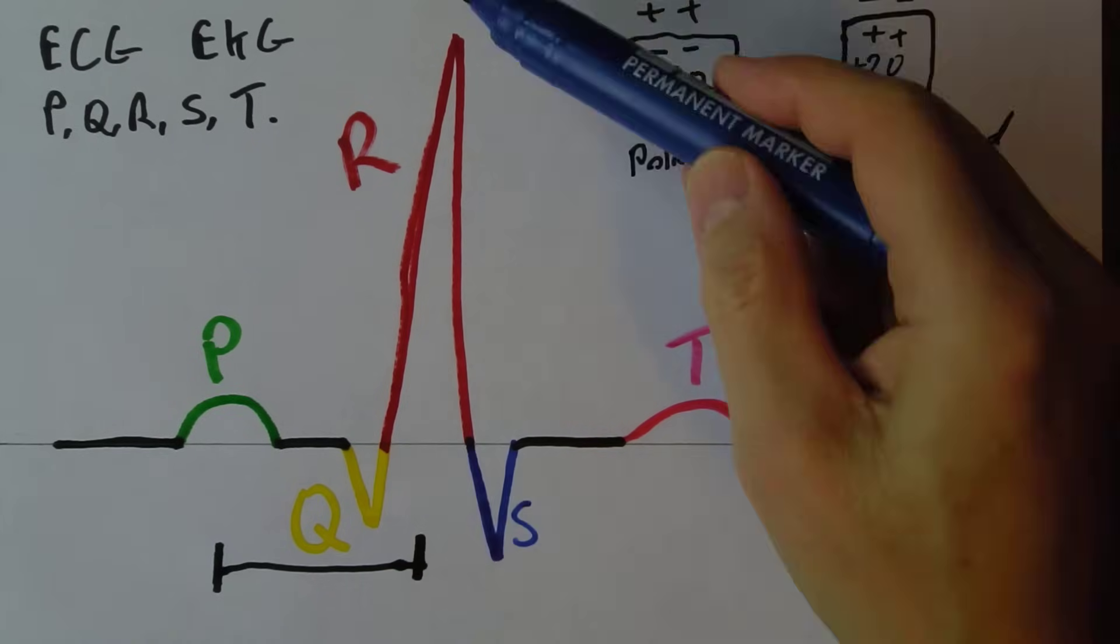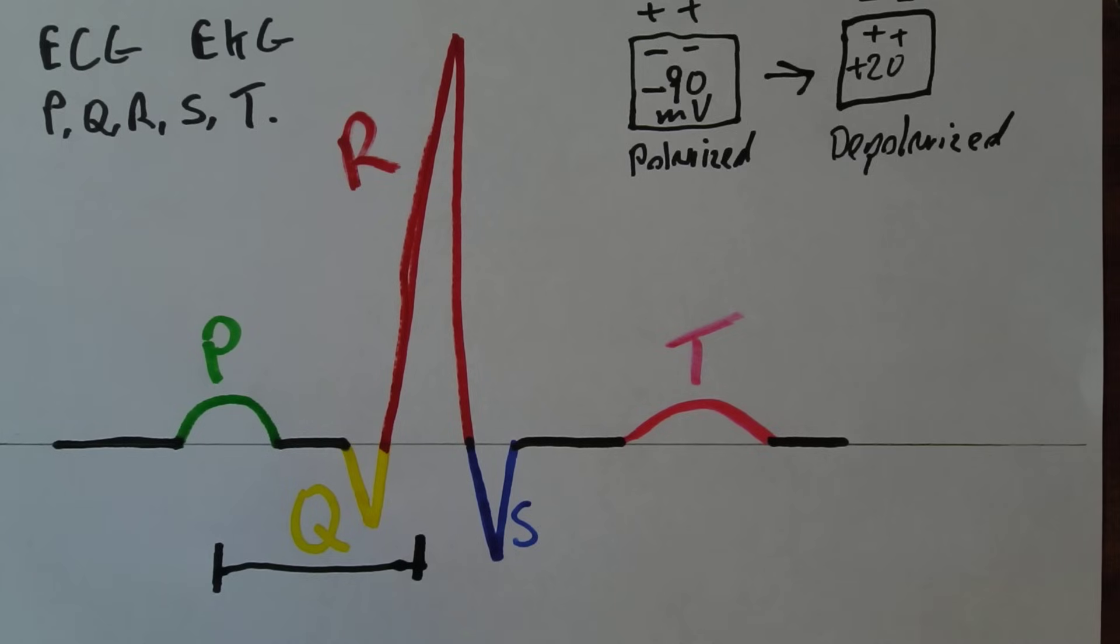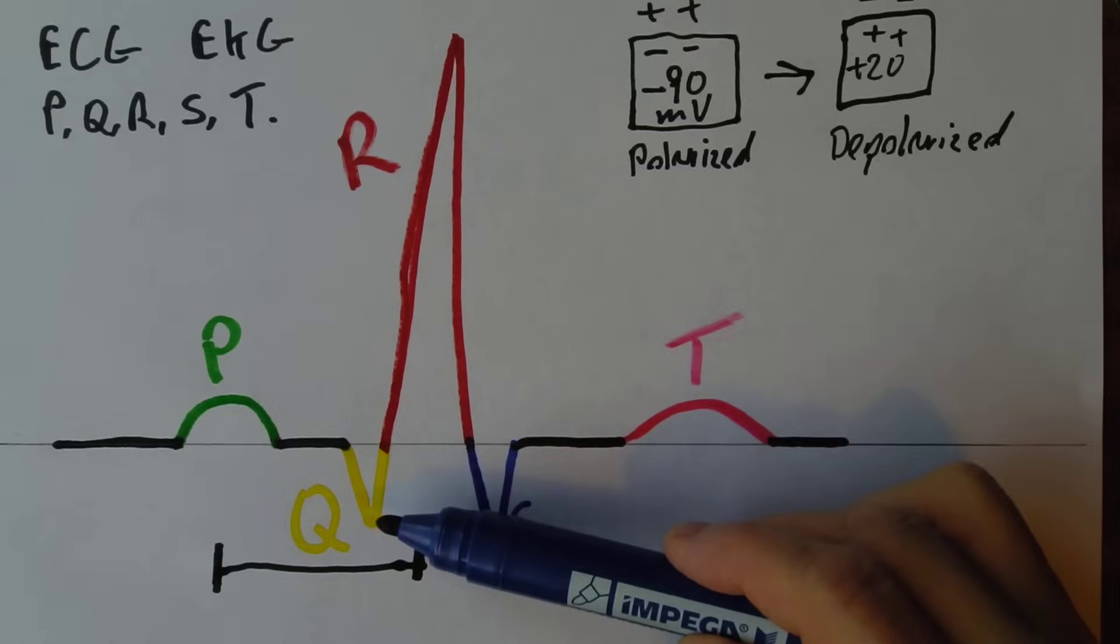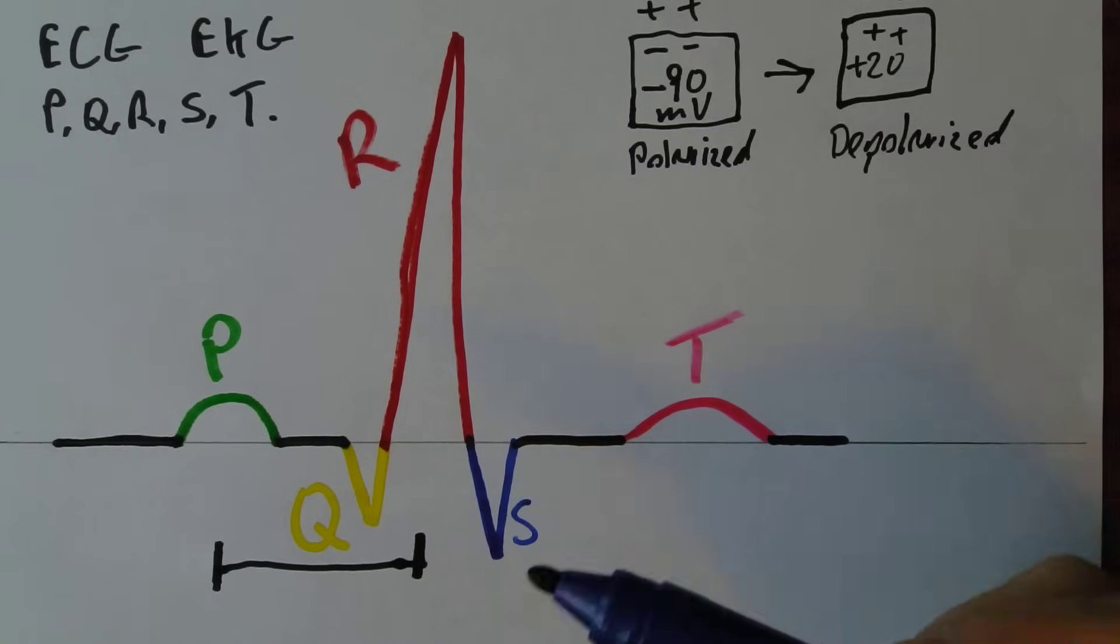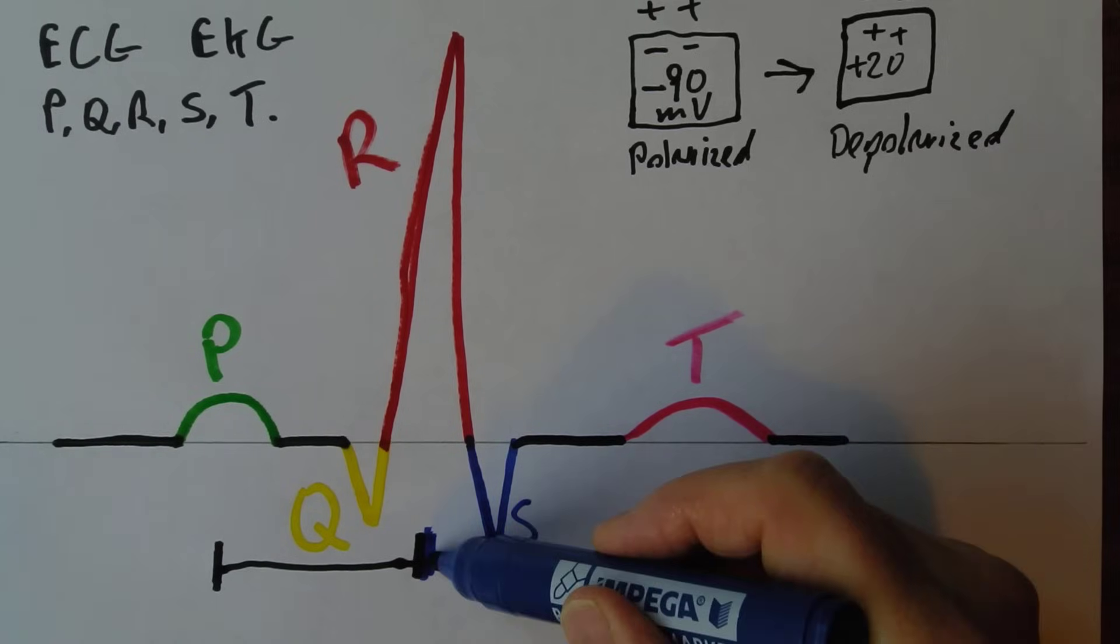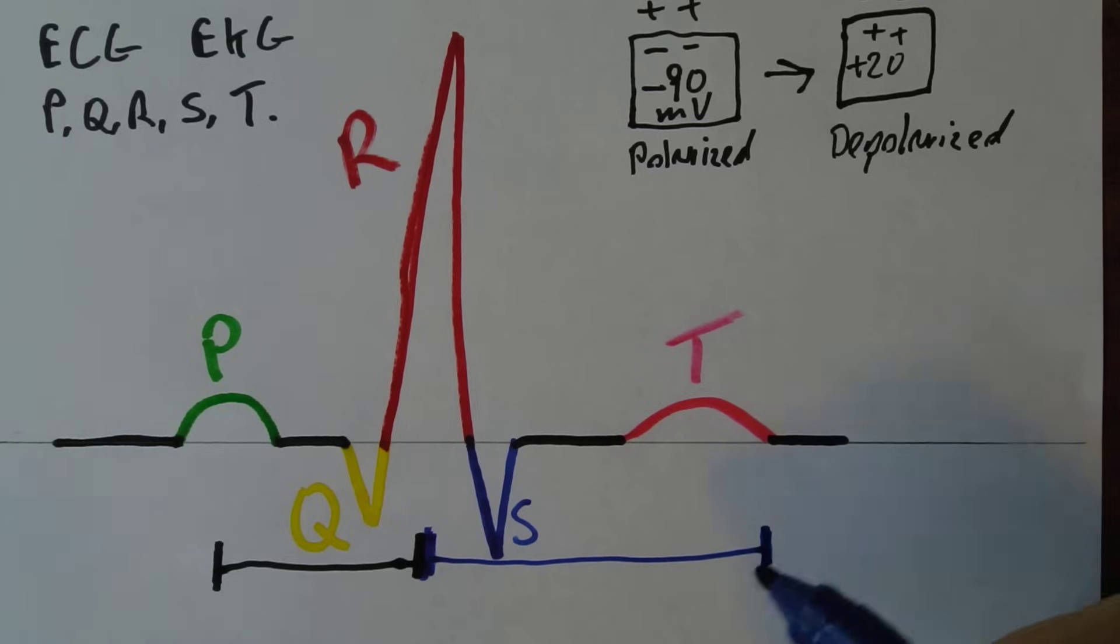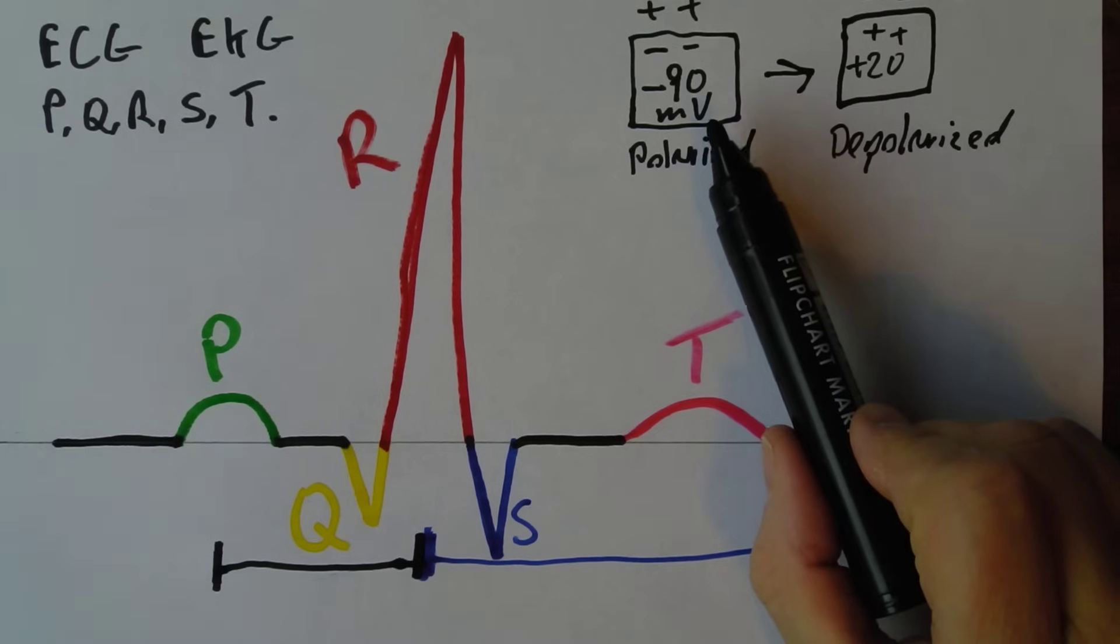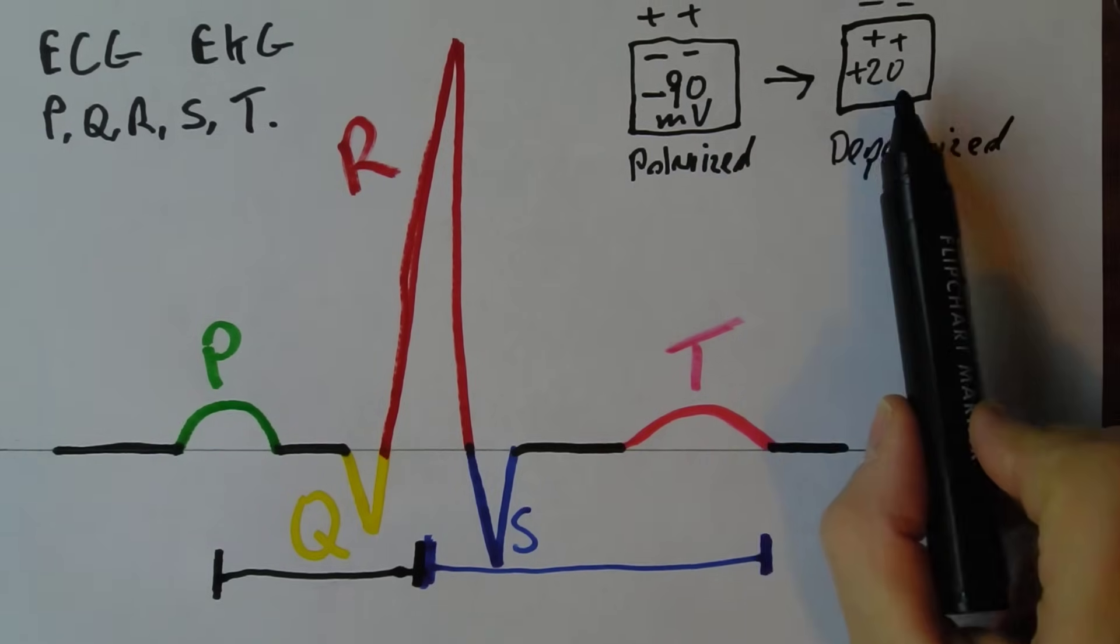Now the QRS complex is the depolarization of the ventricular myocardium. And the depolarization of the ventricular myocardium will initiate the contraction of the ventricular myocardium which will take place during this period of time here. So first we have atrial systole and then the contraction of the ventricular myocardium ventricular systole. And all that muscle contraction is stimulated by the depolarization.